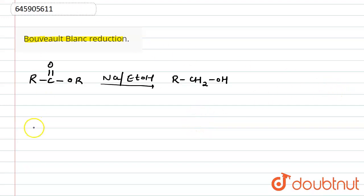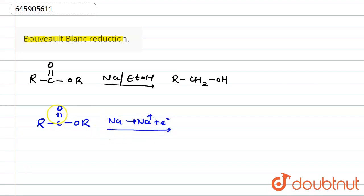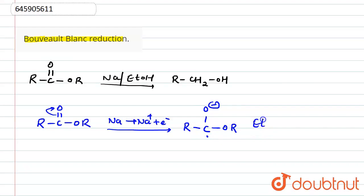First of all, sodium is a metal and sodium can lose an electron. The sodium loses an electron, and that electron participates in this reaction. The pi bond breaks in the upward direction — the oxygen will have a negative charge and the carbon will have a positive charge. That carbon gains the electron to convert into a radical, and it will then convert into a carbanion.